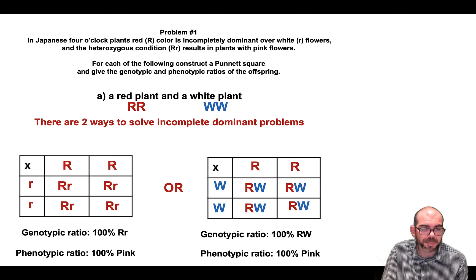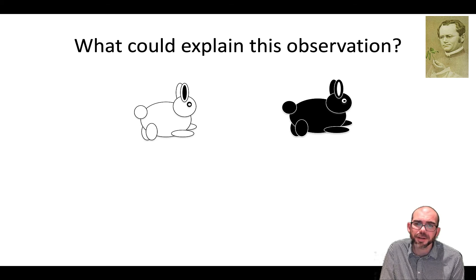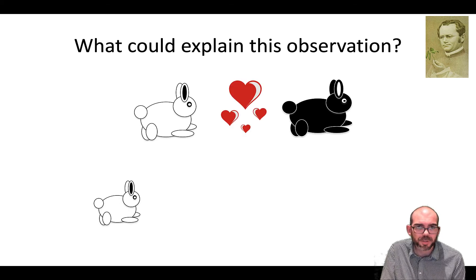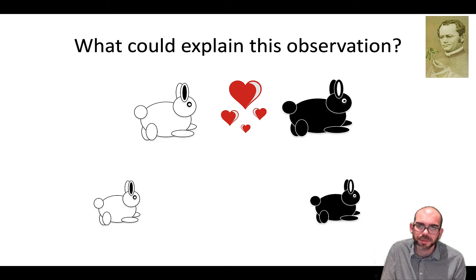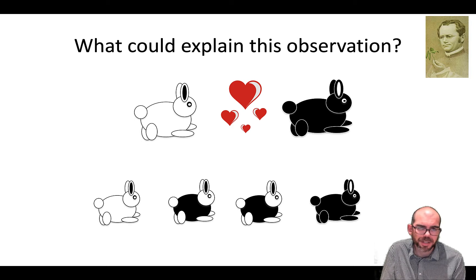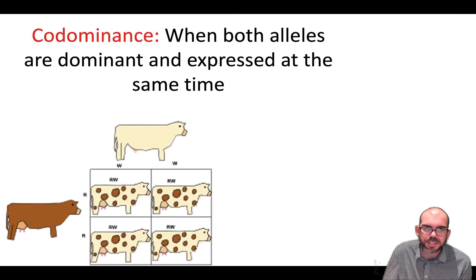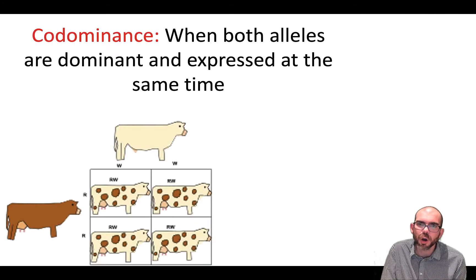So this is incomplete dominance. What if we observe something like this? A black bunny is crossed with a white bunny. One of the offspring is completely white, one is completely black, but two are oreo — they are black and white. How do I explain this using traditional dominance or incomplete dominance? I can't.